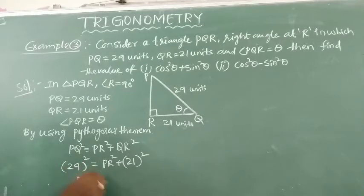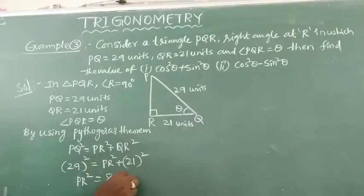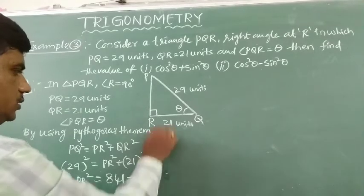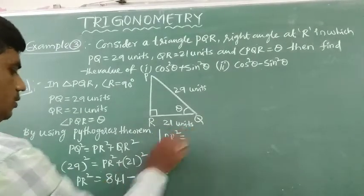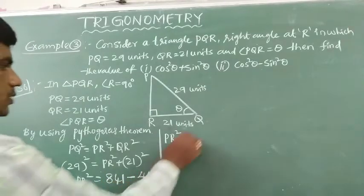PR equals to 29 square, value is 841. So 841. When we send 21 square to this side, minus 21 square value is 441. So, PR length — PR square equals to 841 minus 441, which means 400.